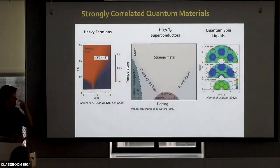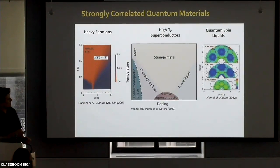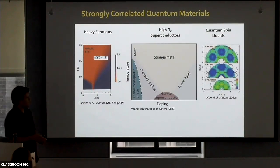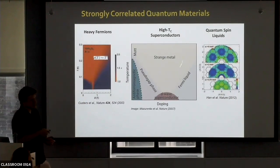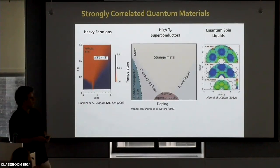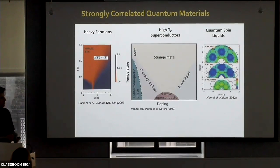And perhaps the most famous of all the quantum materials are the family of high-temperature cuprate superconductors, where in a phase diagram of temperature versus doping, there are a variety of phases, few of which we have a good theoretical understanding about, even to this day after many, many decades of work.